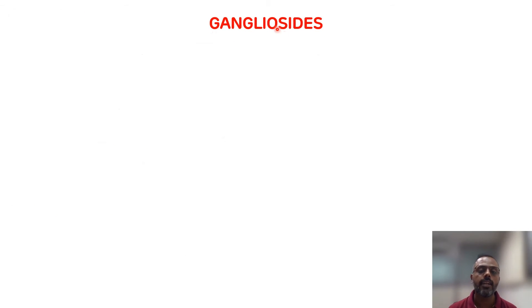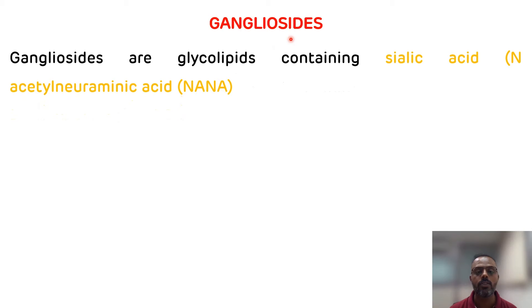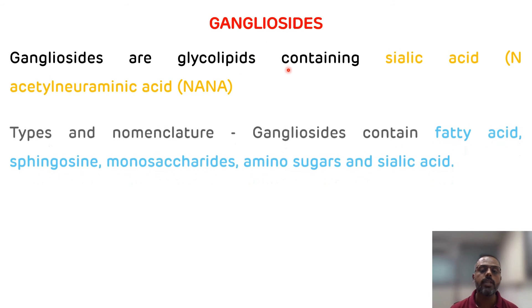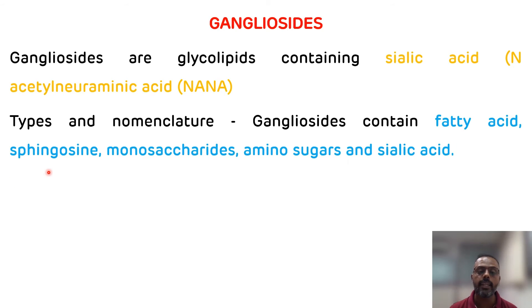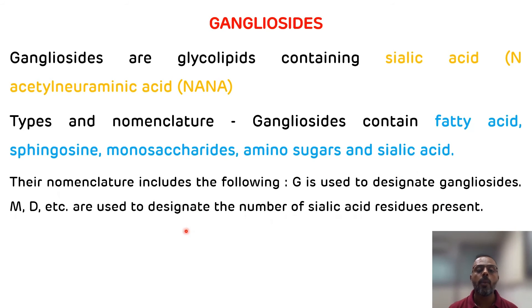The fourth and last glycolipid is gangliosides. Gangliosides are glycolipids which contain N-acetylneuraminic acid, also known as sialic acid. Gangliosides contain fatty acid, sphingosine as an alcohol, monosaccharides, amino sugars, and sialic acid. In their nomenclature, G stands for ganglioside; M and D stand for sialic acid residues — M means one sialic acid residue, D means two sialic acid residues. Examples are GM1, GM2, and GM3, where the numbers indicate monosaccharide units based on chromatographic separation.